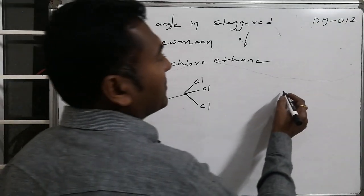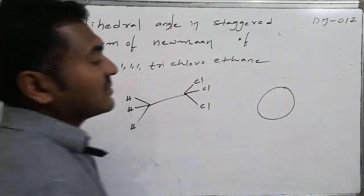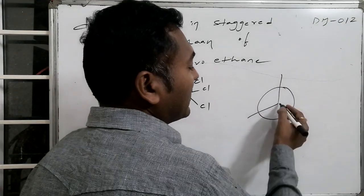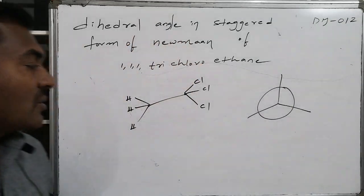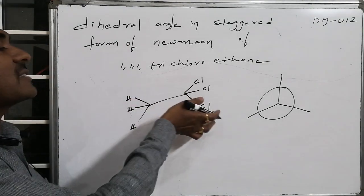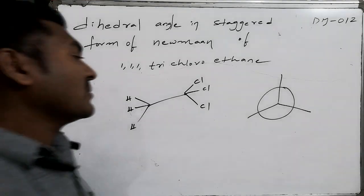Let us write the corresponding staggered conformation. Staggered conformation implies the reference groups should maintain maximum distance. So here in this case, maximum angle - one case the reference is hydrogen, other case the reference is chlorine itself.